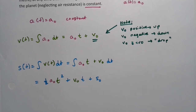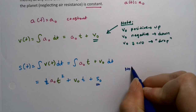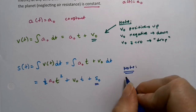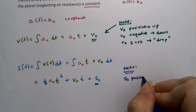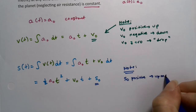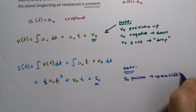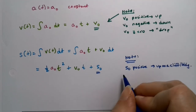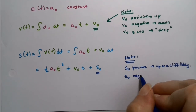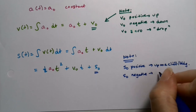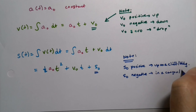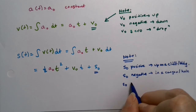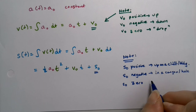Note that s₀ is positive if you're up on a cliff or building, s₀ is negative if you're in a canyon or a hole, and s₀ is zero if you're at ground level.